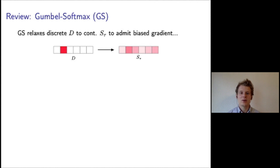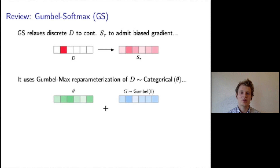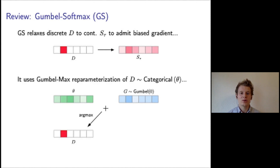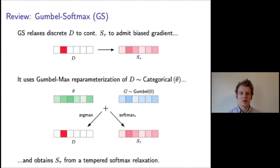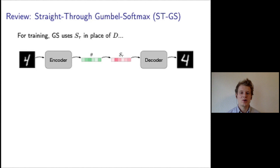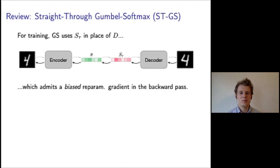The idea of the Gumbel softmax estimator is to relax the discrete variable d to a continuous variable s that admits a biased gradient. We use a dense array with shades of red to indicate that its entries take values between 0 and 1. To compute s, Gumbel softmax uses the reparameterization of d based on the Gumbel max trick. In this reparameterization, the logits of a categorical distribution are perturbed by adding noise from a standard Gumbel distribution, shown as a blue array. The properties of the Gumbel distribution guarantee that the argmax of the perturbed logits will be distributed as a sample from the categorical distribution. The relaxation s is obtained by replacing the argmax operation with a tempered softmax. For training a model, Gumbel softmax uses the continuous variable s in place of the discrete variable d in both the forward and backward pass.